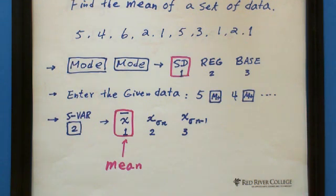For example, the data here is given as 10 numbers: 5, 4, 6, 2, 1, 5, 3, 1, 2, 1. I use this set of data to show you how to use a Casio calculator to find the mean and find the standard deviation.